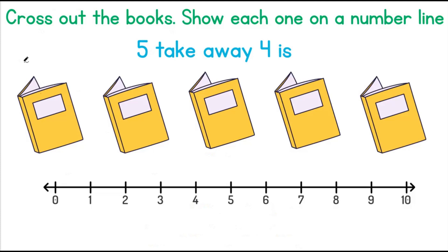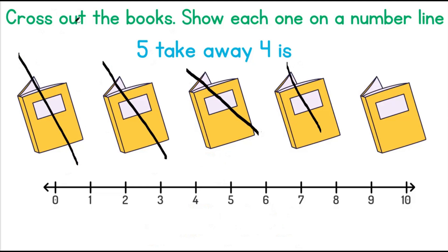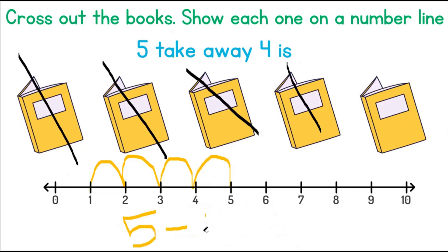5 take away 4. 1, 2, 3, 4. Our number line will read 1, 2, 3, 4. Our number sentence should read 5 minus 4, which is going to equal 1.